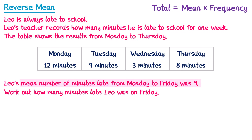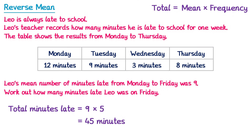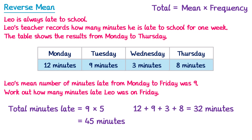So we're going to work out the total number of minutes late by multiplying the mean by the frequency. The total number of minutes late is the mean, which is 9, multiplied by the frequency — the number of days from Monday to Friday is 5. So we multiply by 5, and 9 times 5 is 45. Leo must be 45 minutes late in total. Adding up Monday to Thursday gives 32. So 45 subtract 32 gives you 13 — on Friday, Leo is 13 minutes late to school.